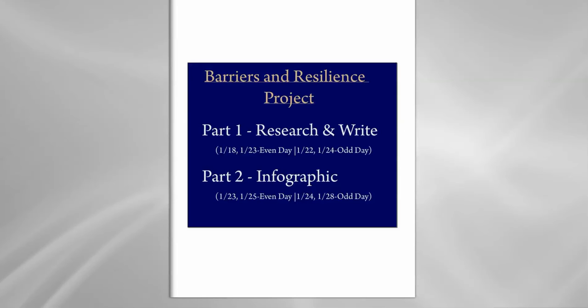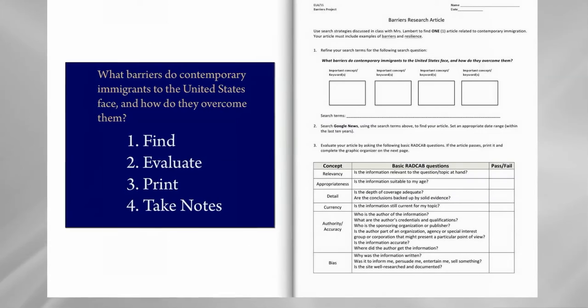The first part will be done independently and the second part will be done in small groups. We're going to begin with searching for, finding, evaluating, and eventually printing one article that answers the question: what barriers do contemporary immigrants to the United States face and how do they overcome them? We're going to be using the search strategies that Mrs. Lambert helped us develop in the library classroom over the last few weeks.